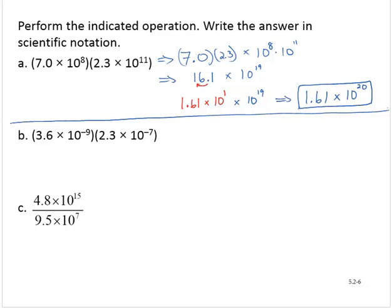3.6 times 10 to the negative 9th. Multiply by 2.3 times 10 to the negative 7th. Using a similar process, that's 3.6 by 2.3 times 10 to the negative 9th by 10 to the negative 7th.